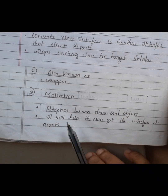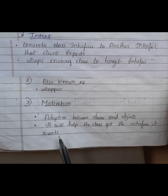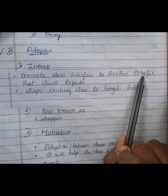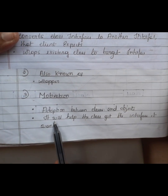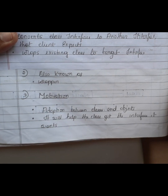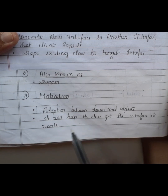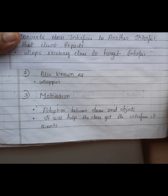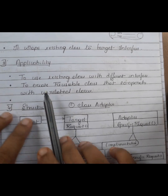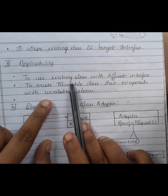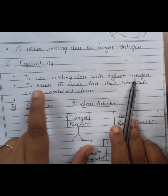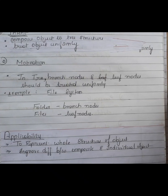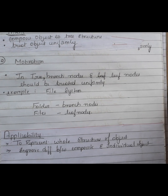For example, the sentence 'converts class interface to another interface that a client expects' can be rewritten as 'it will help the class get the interface it wants.' Under applicability, the same meaning appears as 'to use an existing class with a different interface' or 'to create a reusable class that cooperates with unrelated classes.' The meaning is the same but written differently. That's all about structural design patterns.